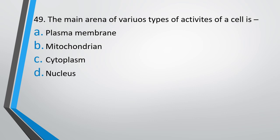Question number 49. The main arena of various types of activities of a cell is: plasma membrane, mitochondria, cytoplasm, or nucleus. The main arena of various types of activities of a cell is — the correct answer is option C, that is cytoplasm.